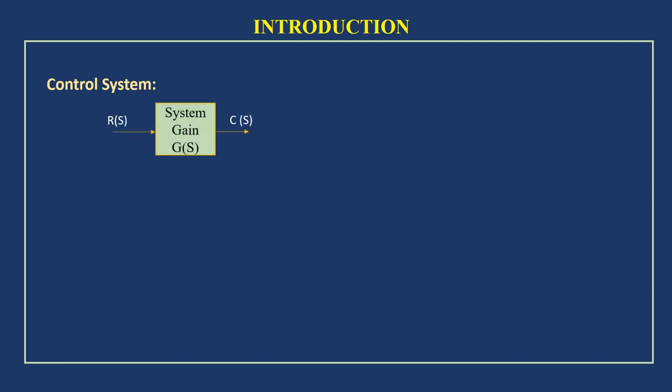Normally, a control system can be represented as a block diagram like this. That block represents the overall system gain, which is expressed as G of S. R of S is the Laplace transform of the reference input, and C of S is the Laplace transform of the controlled output. This is the flow of input and output signal. The output signal flow in the frequency domain can be represented as C of S equal to R of S into G of S — the product of input signal flow and system gain.